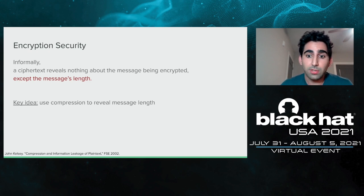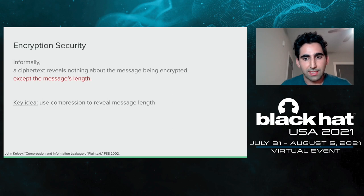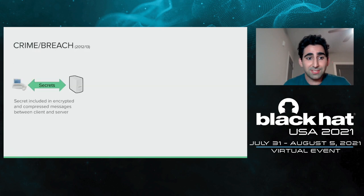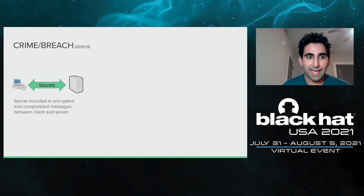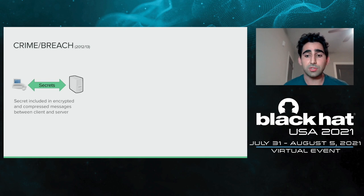Messages that compress more are shorter; messages that compress less are larger. If you can set it so that learning something about the message's length tells you about the message content, then you have a compression side channel. Compression side channels have famously been used in the CRIME and BREACH attacks to break TLS. I'm going to give a very high-level overview of the intuition behind these attacks, just so we can draw some lessons on how compression side channels can be used.